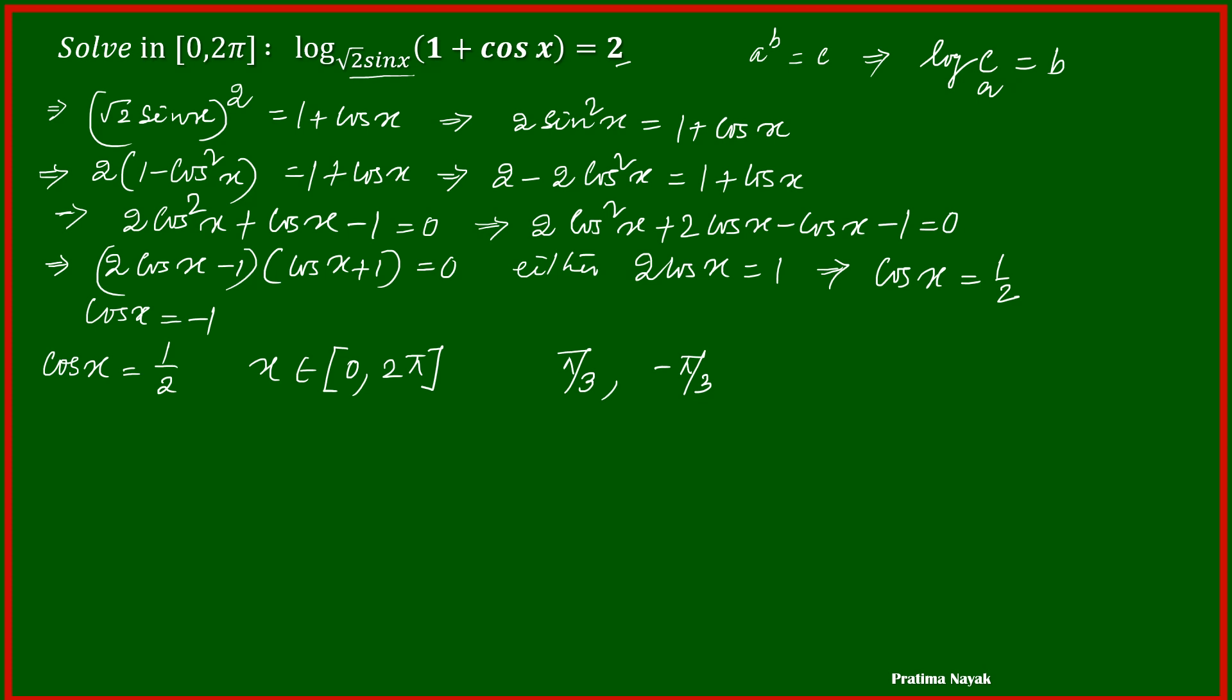Now if we analyze this logarithm equation, root 2 sin x of 1 plus cos x equals 2, here this π by 3 will satisfy this equation. But this will not satisfy because the sin x at minus π by 3 will be negative, so it is discarded. This we can write as minus π by 3 or 2π minus π by 3, that is 5π by 3. That is also rejected because sin x will be negative at that time.